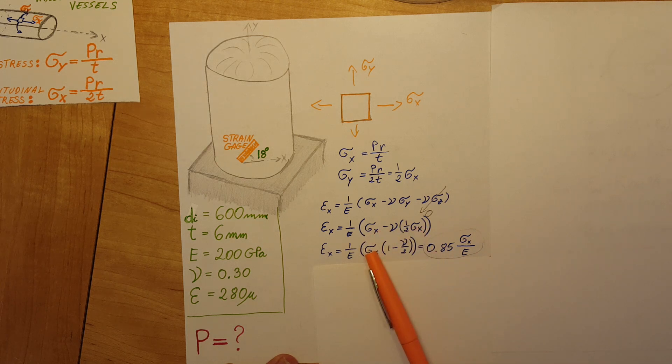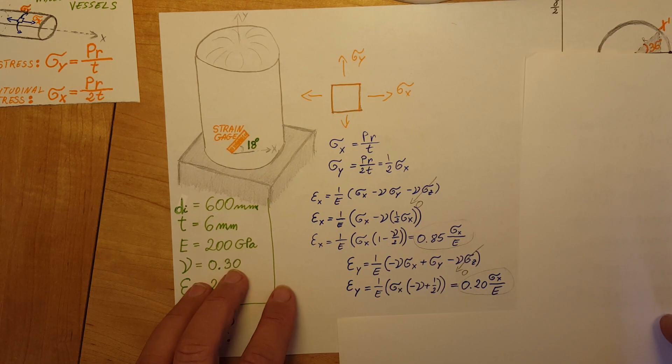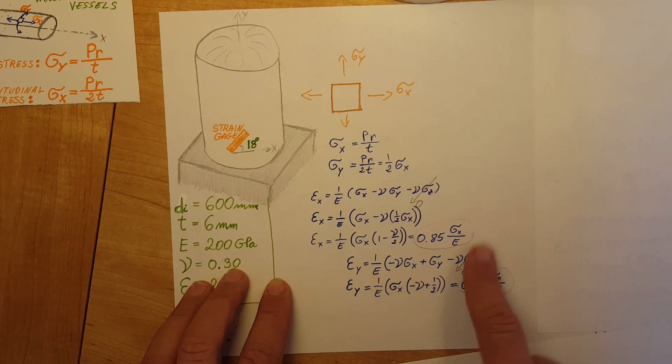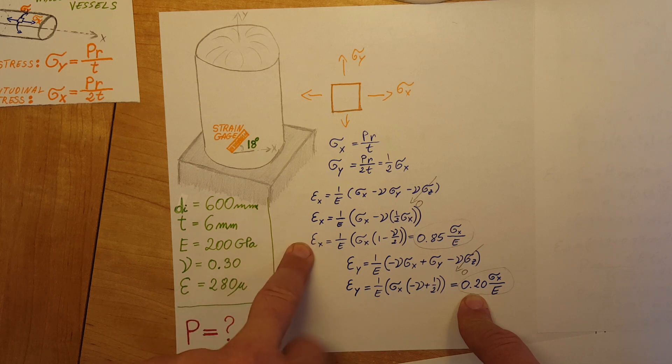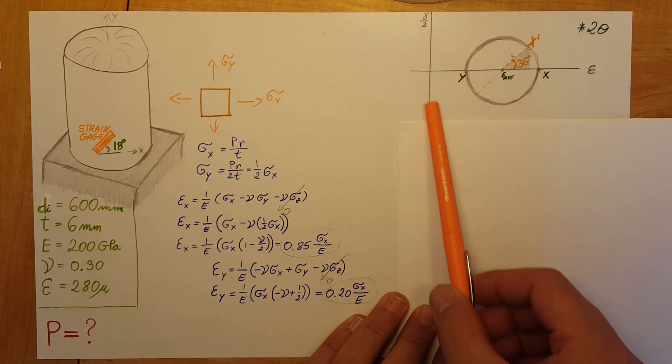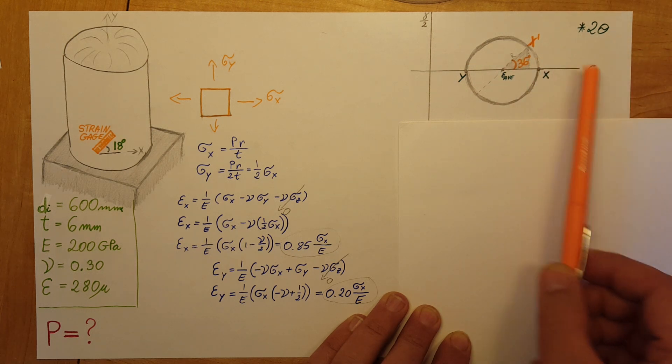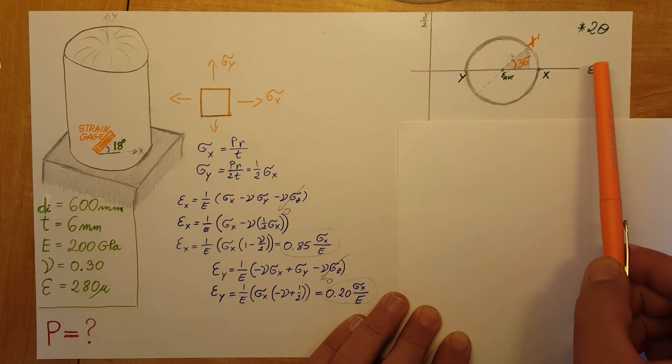Then I'll factor out sigma x and get a simpler formula. Plugging in, I get a value of 0.85, and I'll leave sigma x over E as a variable. Same thing for the y direction—using the same formulas, solving for it, plugging in, we get the value for strain in the y direction. Now we have sigma x and sigma y—these two will be my principal orientations for x and y.